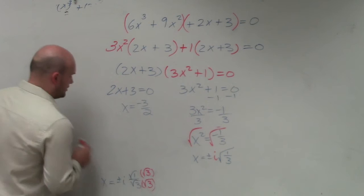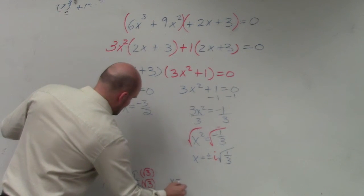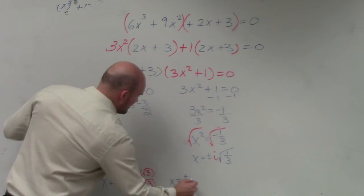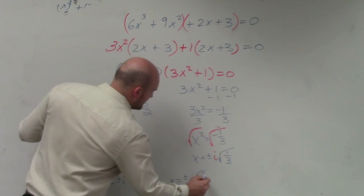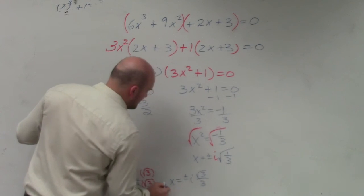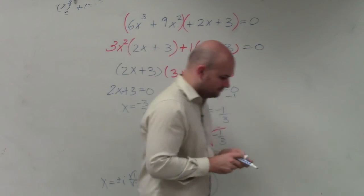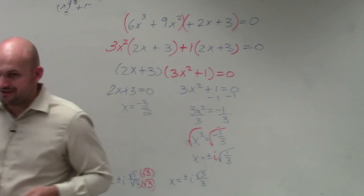Another algebra skill. So my final answer is x equals plus or minus i square root of 3 times 1 is just the square root of 3 over 3. And that would be your answer.